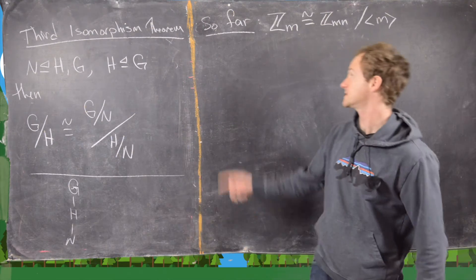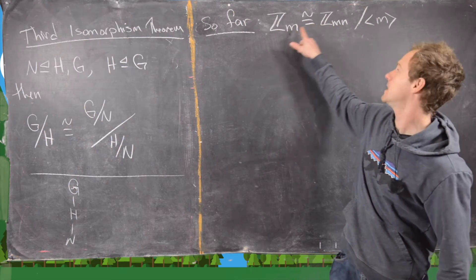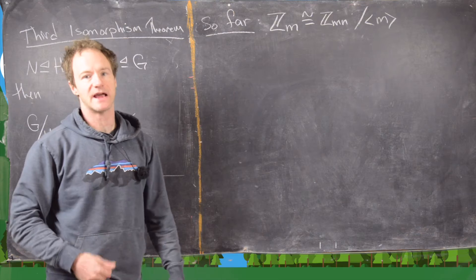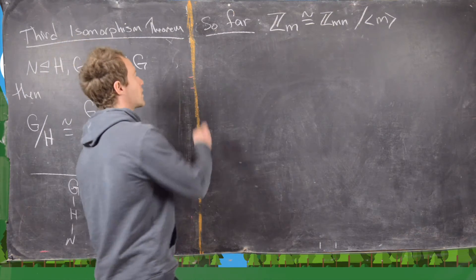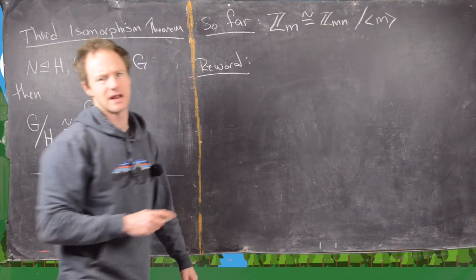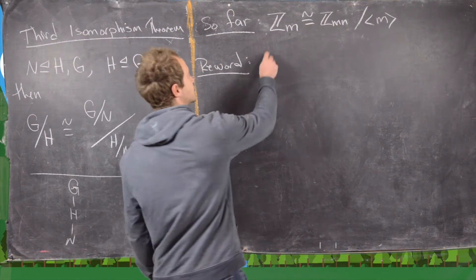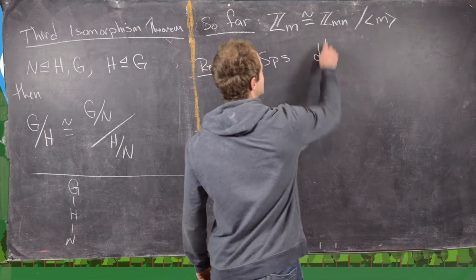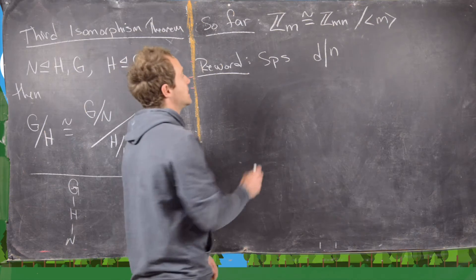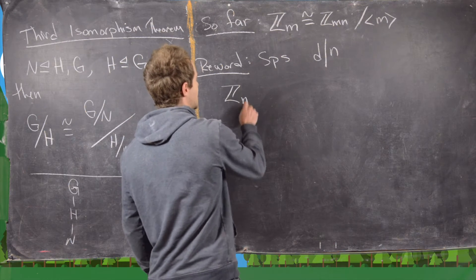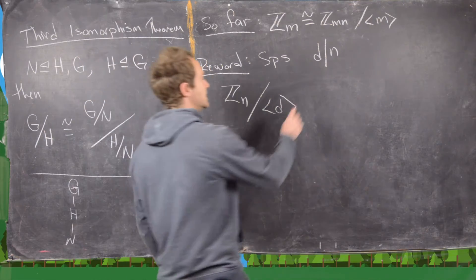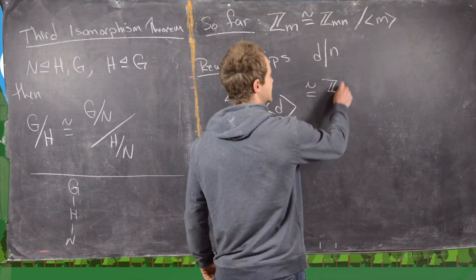We just proved using the third isomorphism theorem that Z_M is isomorphic to Z_MN mod the cyclic subgroup generated by M. Rewording this: if D is a divisor of N, then Z_N mod ⟨D⟩ is isomorphic to Z_D.